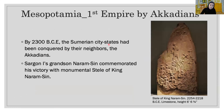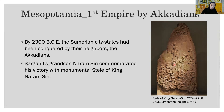By about 2,300 BCE, the Sumerian city-states had been conquered by the Akkadians to the north. Under ruler Sargon I, the Akkadians established the region's first empire. Sargon's grandson Naram-Sin commemorated his victory over the Lulubi people of eastern Mesopotamia with the monumental Stele of King Naram-Sin, a limestone monument that pictures the Akkadian king dressed in god-like regalia, striding confidently over defeated soldiers.